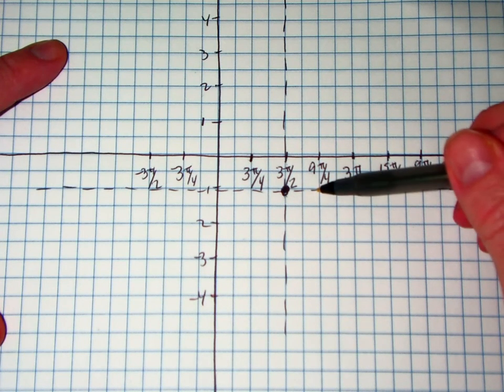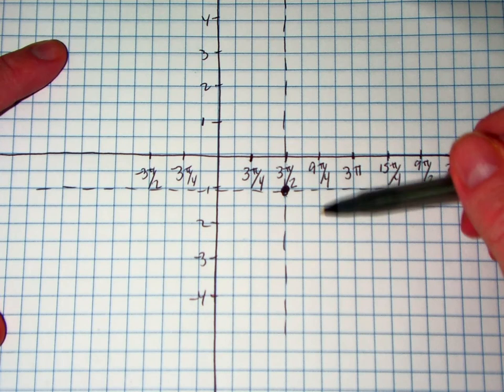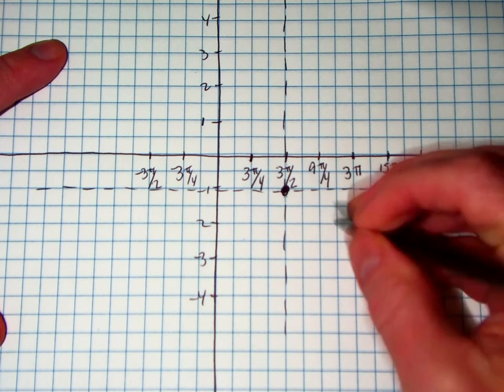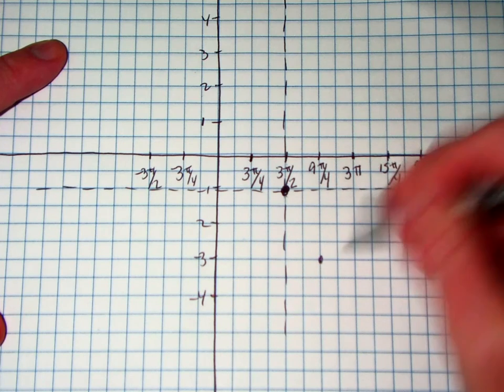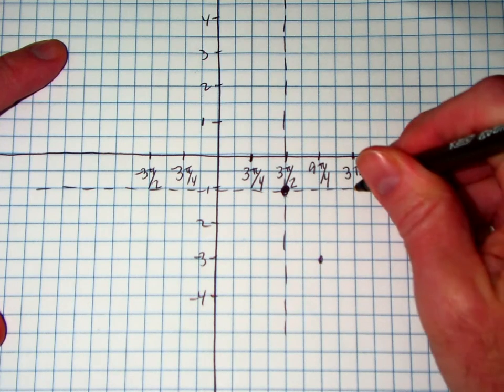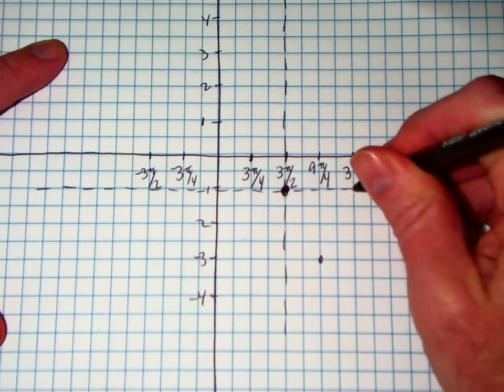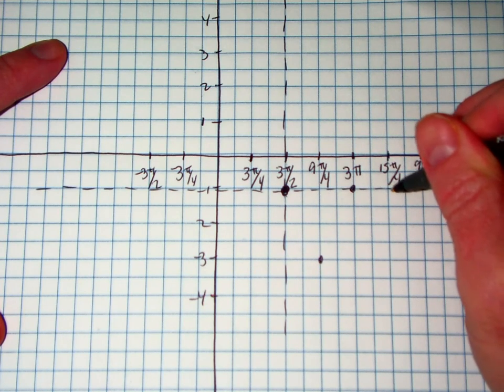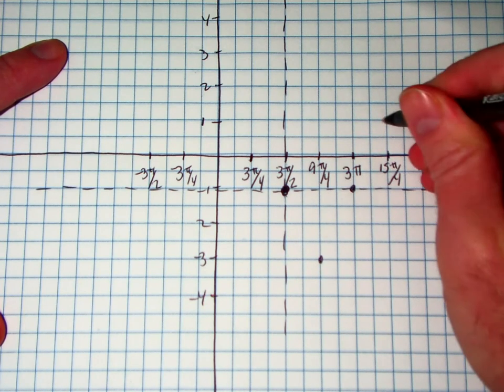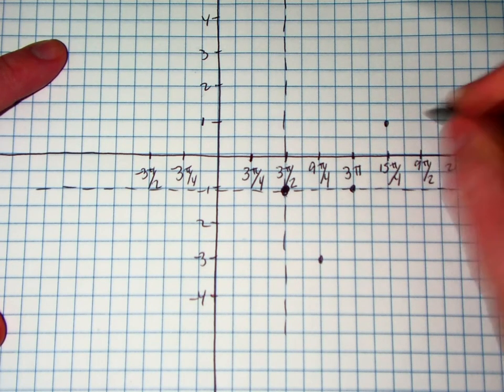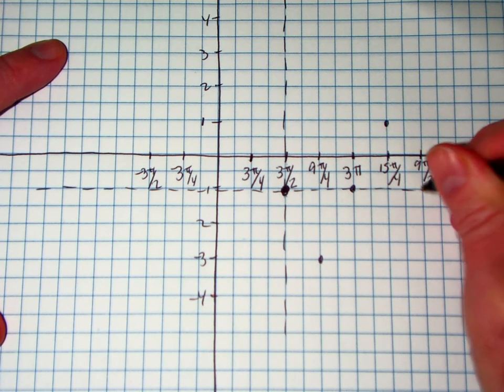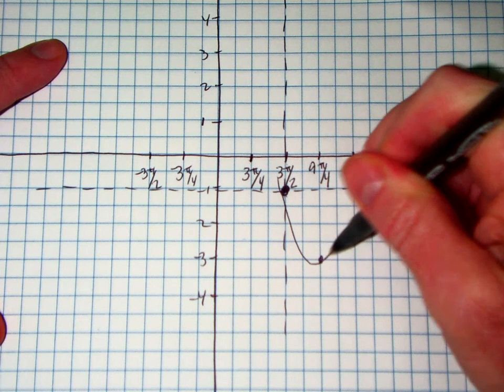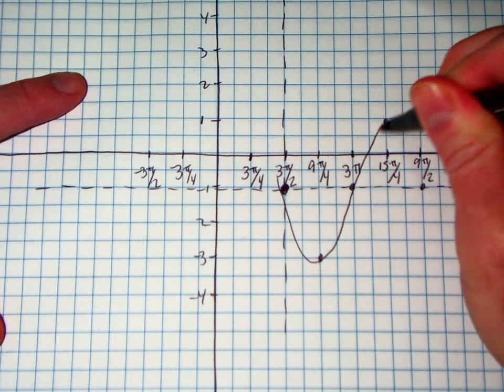So I'm going to go to my first tick mark, and I'm going to go down 2 units since my a value is 2. So down 2, down to negative 3. Back up to my equator, my midline. The next tick mark, we're going to go up 2 units, so up to positive 1. And then next tick mark, and then back down. And that is my one period of this function.